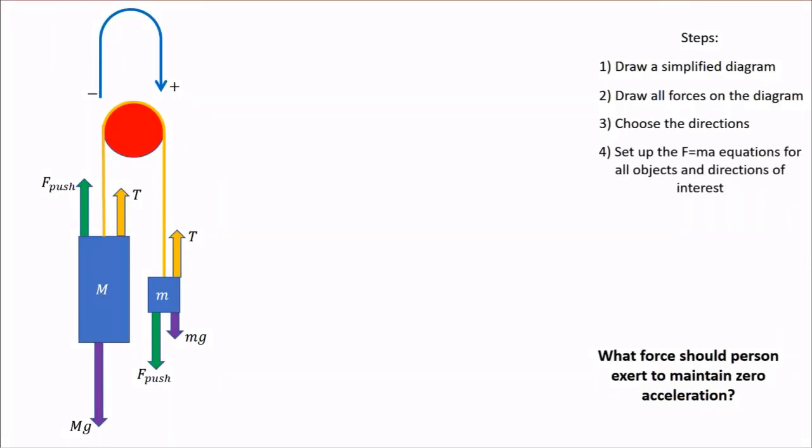Now, the next step is to set up the equations using F equals MA. Let's start with the person, the big M. We have that big M times A equals the sum of forces. I'll start with all the positive forces, which are those that act upward. We have F push, and we have tension. Now, the only remaining force is gravity, which acts downward, so it's negative. So we put minus Mg into the equation.